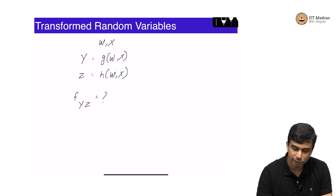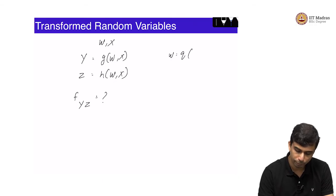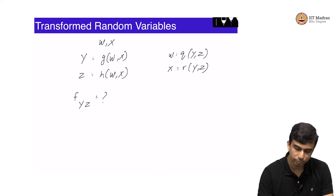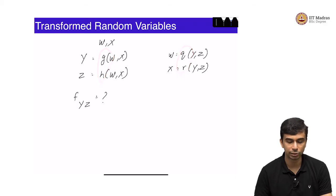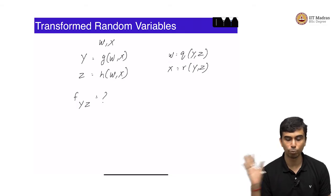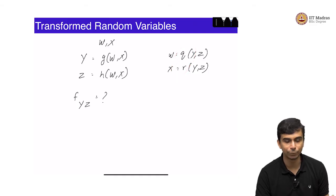That means there exist some functions q and r such that w is equal to q of y comma z and x is equal to r of y comma z. So q and r are effectively inverses of g and h. g and h transform w, x to y, z; and q and r transform y, z to w, x. These q and r need not always exist — you can clearly imagine a case where it is not possible.